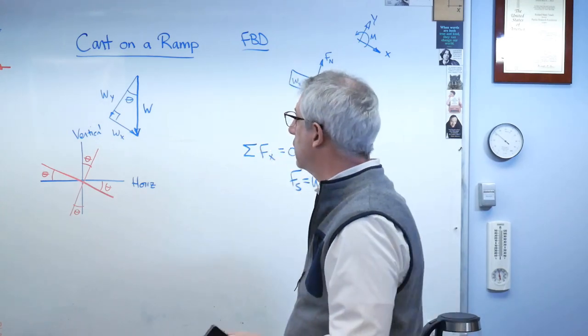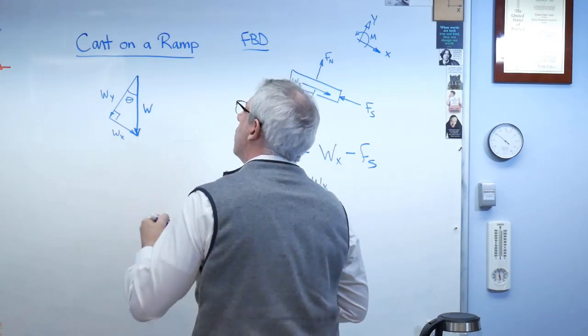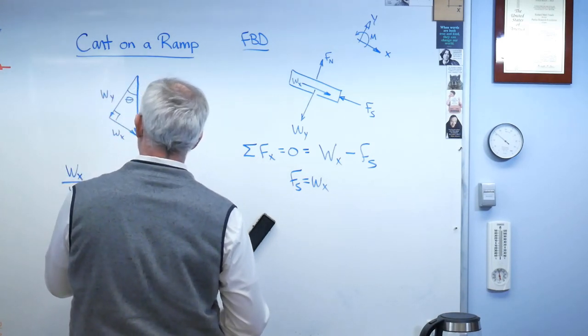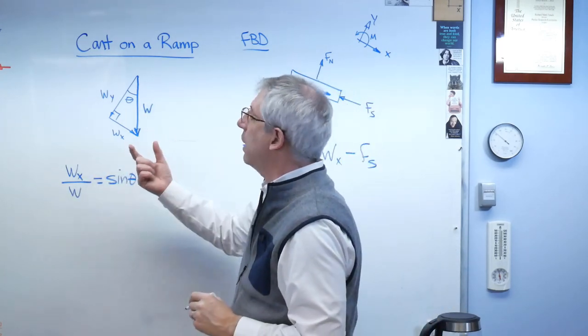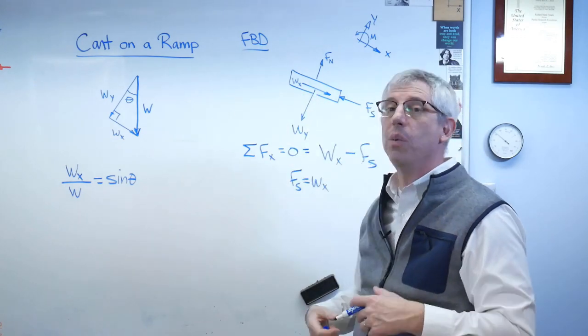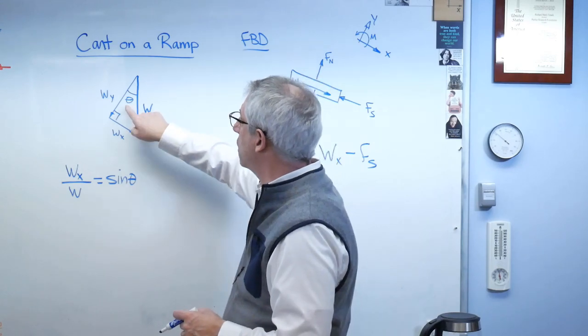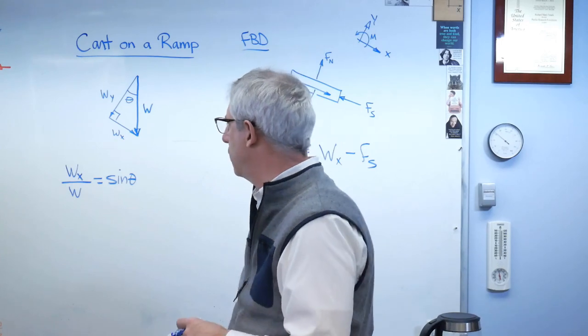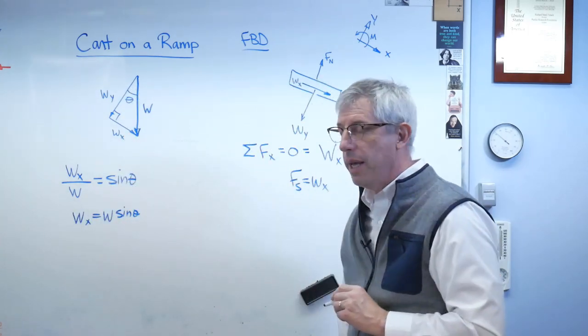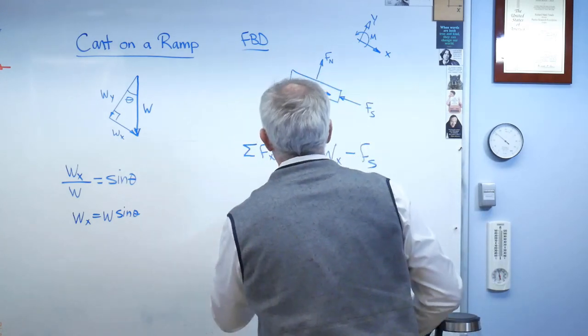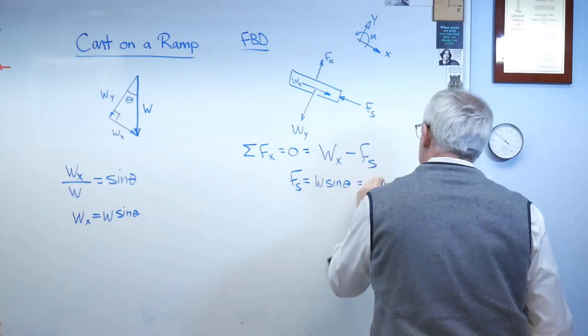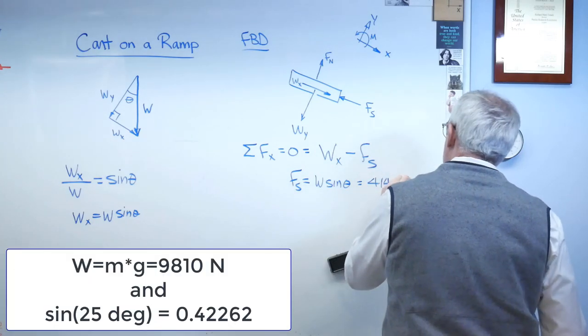That means wx over w must be sine theta. And we can actually check this. If the angle of the ramp was really small, less than one degree, wx, the force trying to make the cart go down the ramp, would also be really small. So if this angle is really small, that means sine theta better get really small. Sine of zero is zero, so it makes sense. So that's wx. Let's go ahead and replace wx with w sine theta. And what we get is the force down the ramp is 4145.89 newtons.